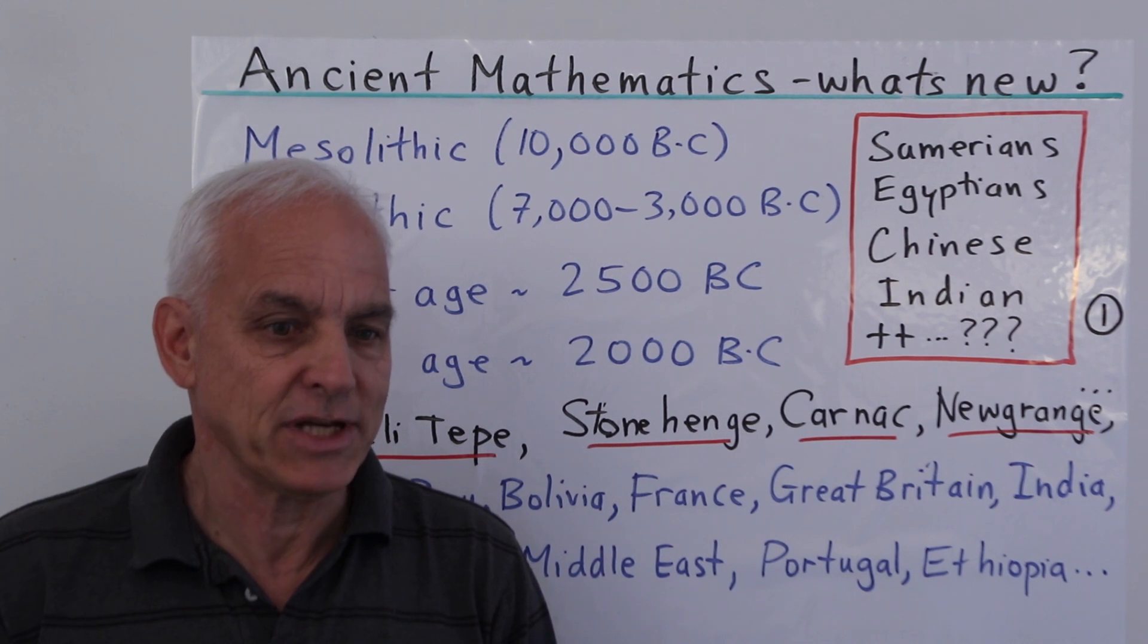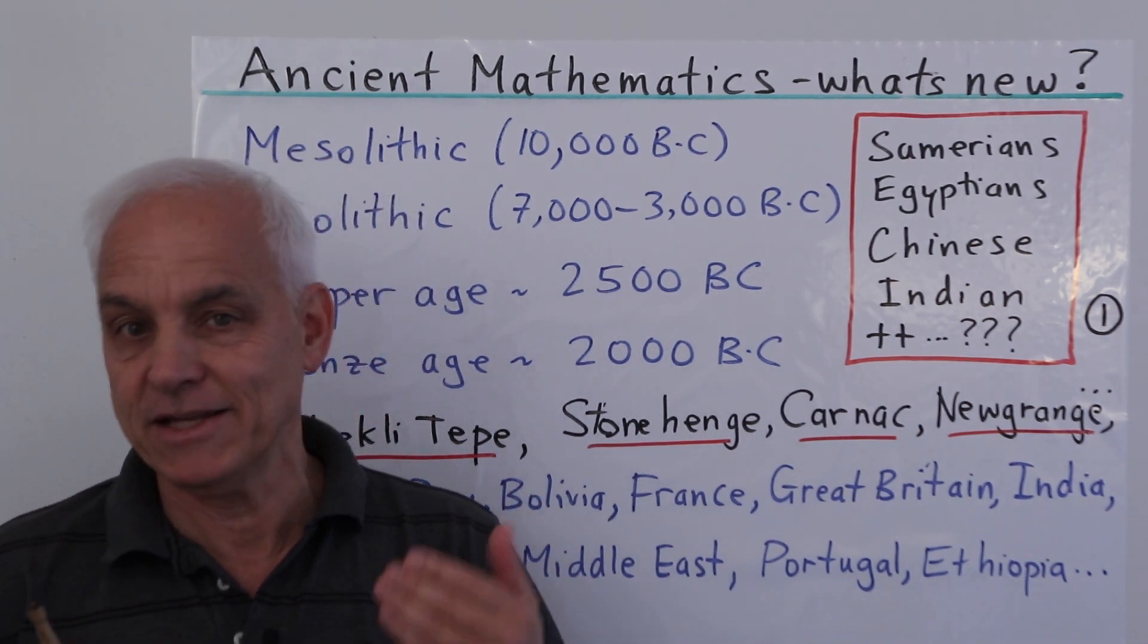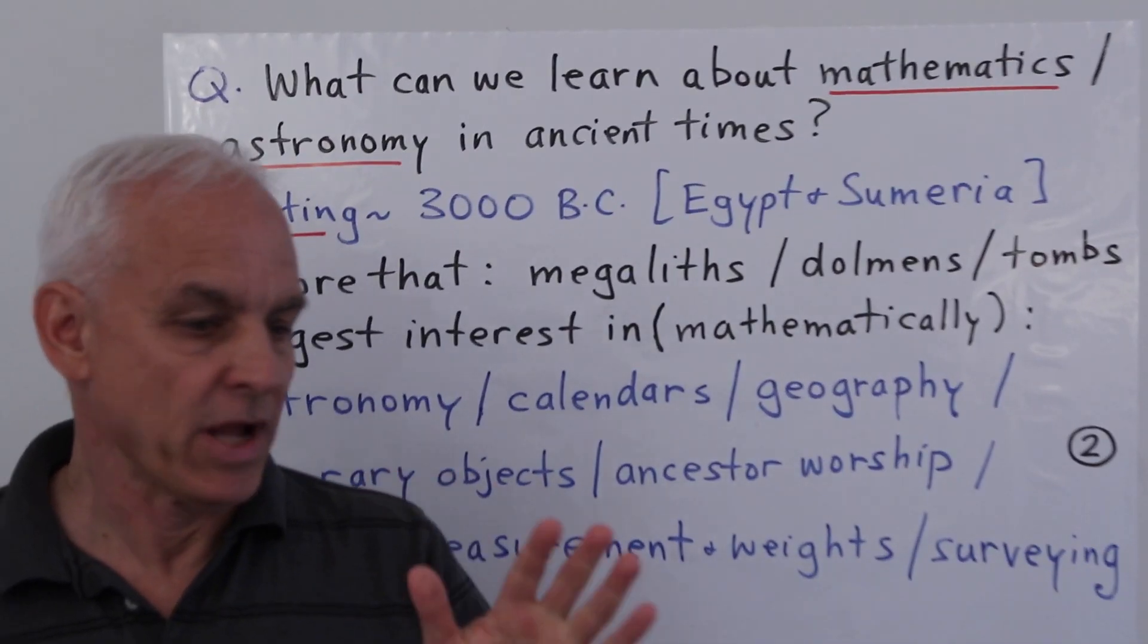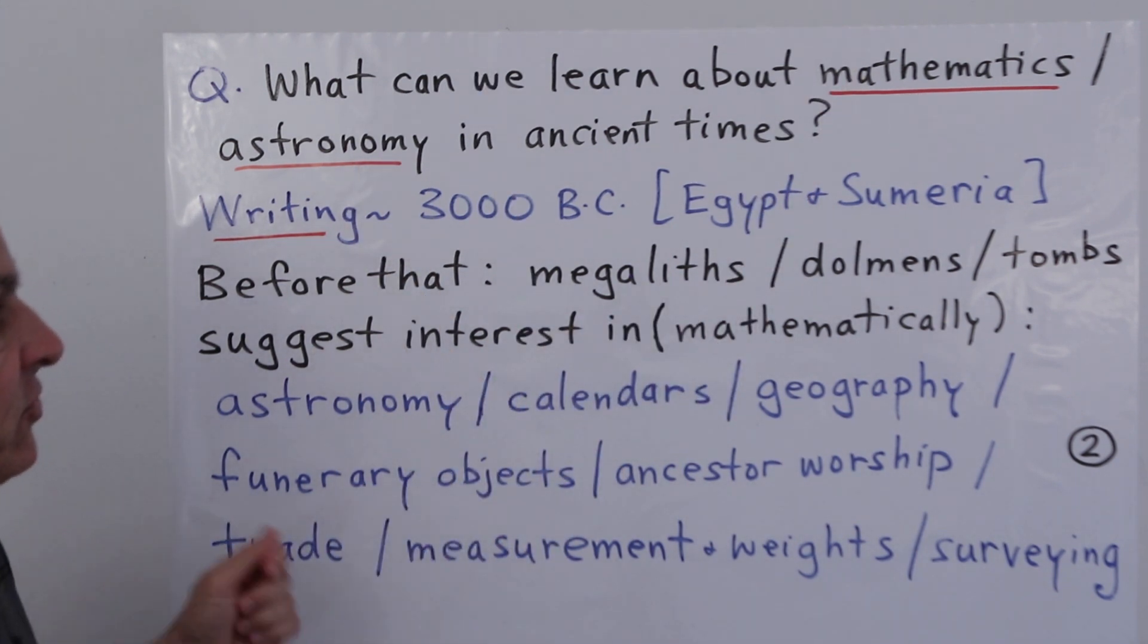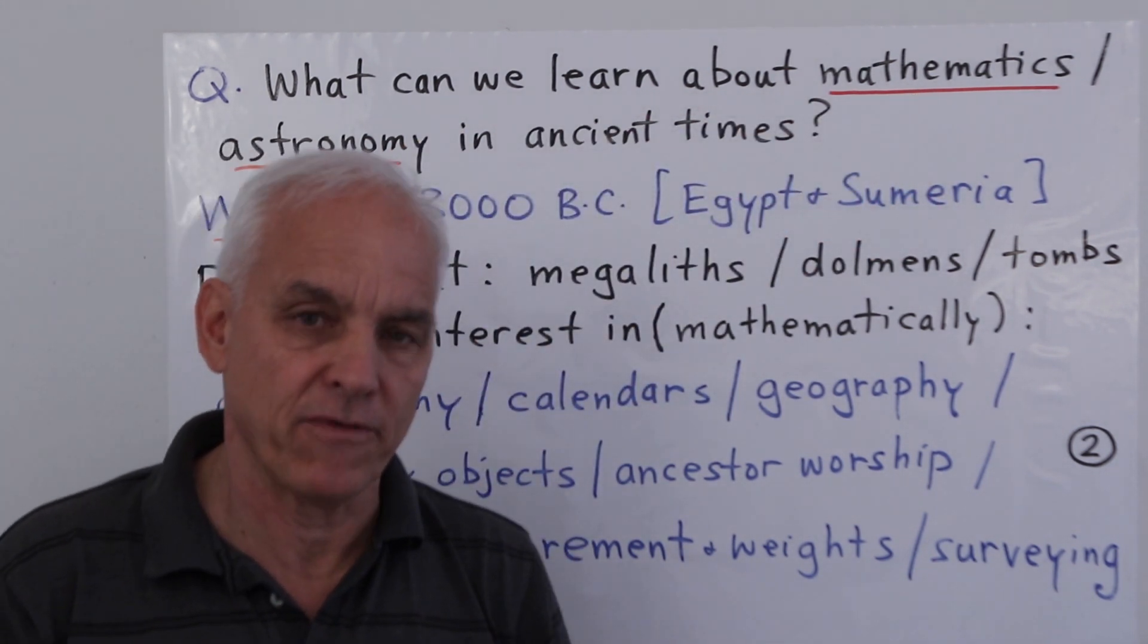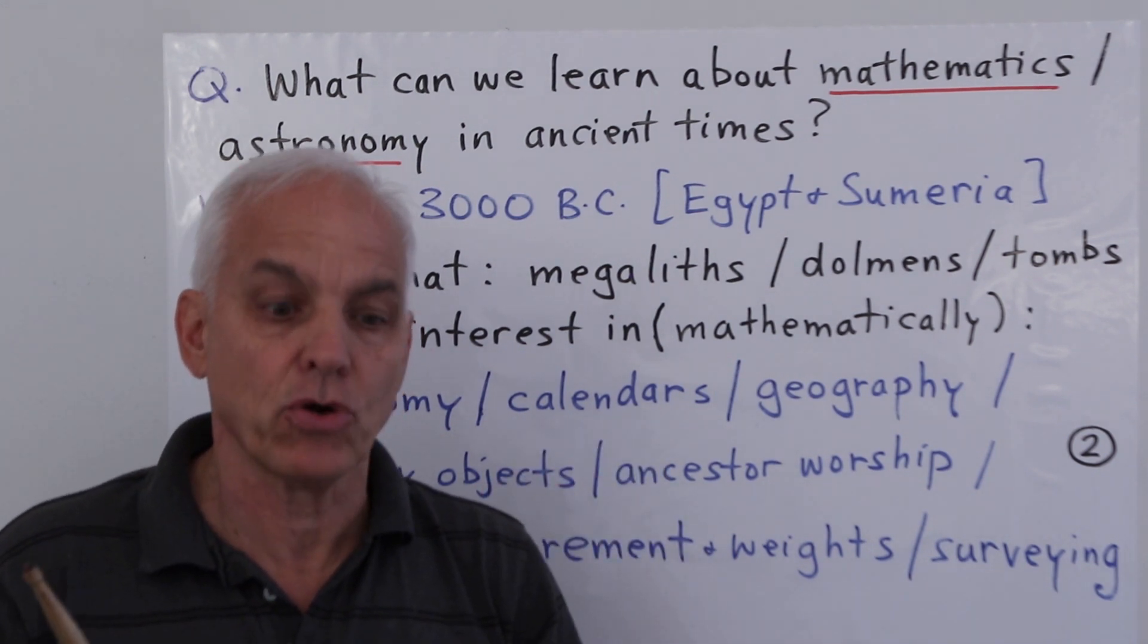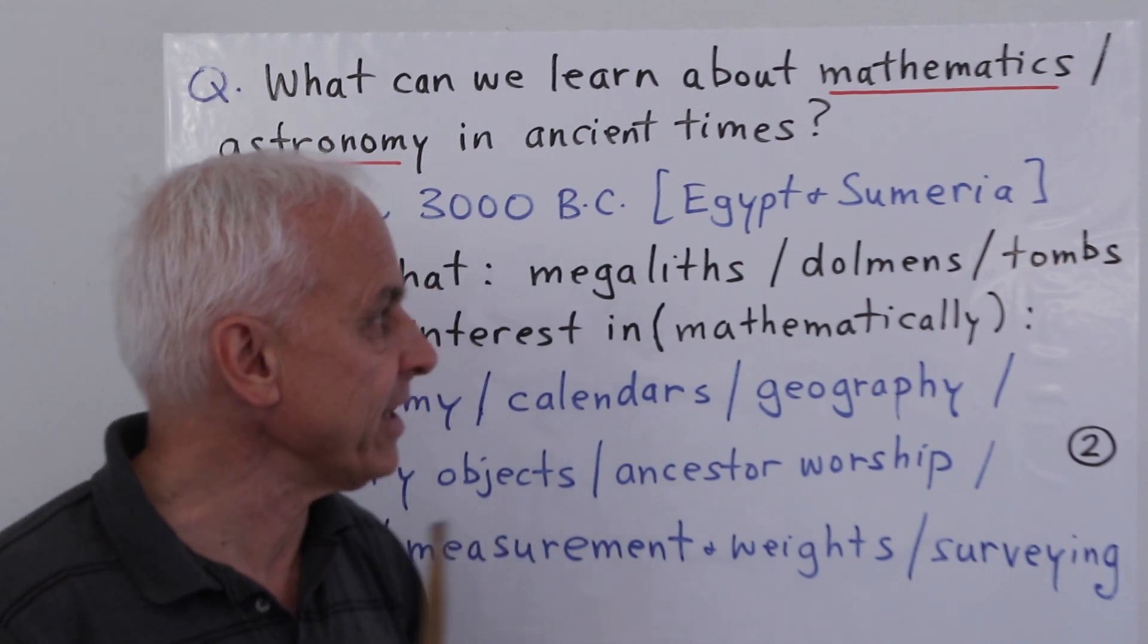We're particularly interested in the mathematical aspect of what might have been going on in these very ancient times. The question we're mostly interested in is: what can we learn about mathematics and astronomy in ancient times? Notice that I'm including mathematics and astronomy almost together here, and that will be typical for our investigations. It's really hard to separate early mathematics from early astronomy. They are very closely linked.